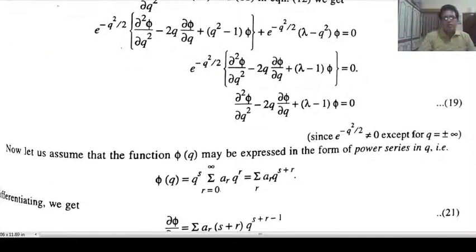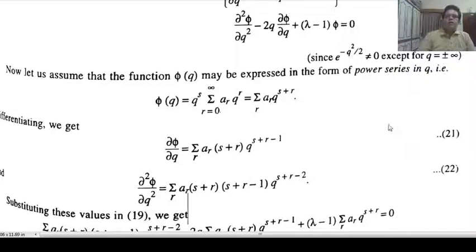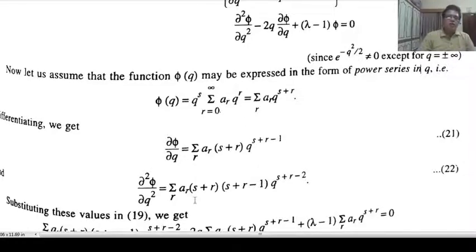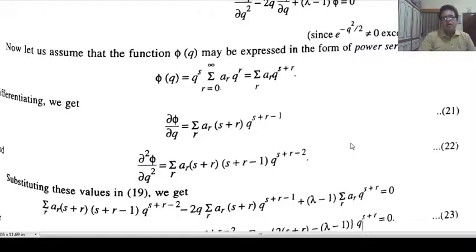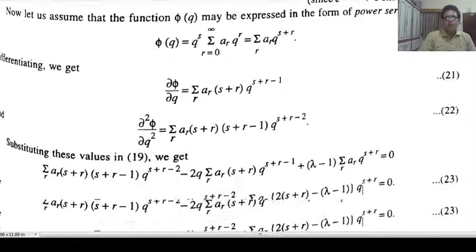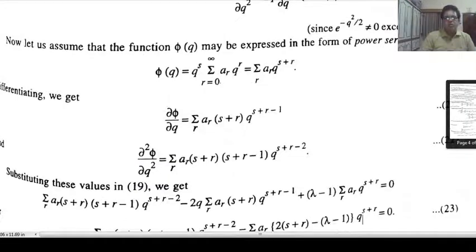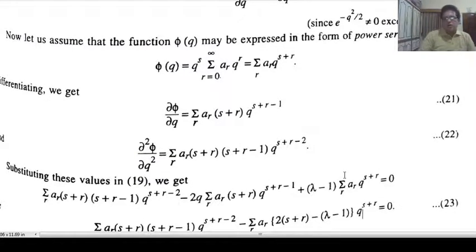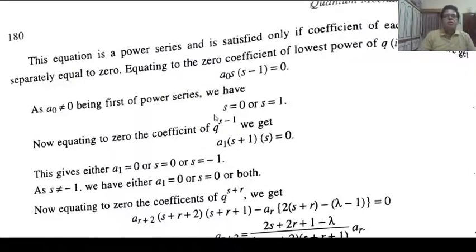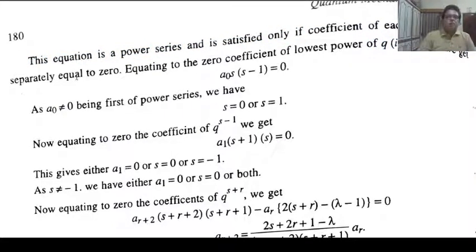The function φ(q) is expanded as a power series: φ(q) = q^s · Σ(r=0 to ∞) A_r · q^r = Σ A_r · q^(s+r). We compute the first and second derivatives and substitute them into the equation. This yields equation 23, which is a power series satisfied only if the coefficient of each power of q is separately equal to zero.